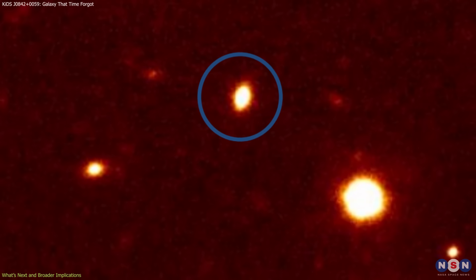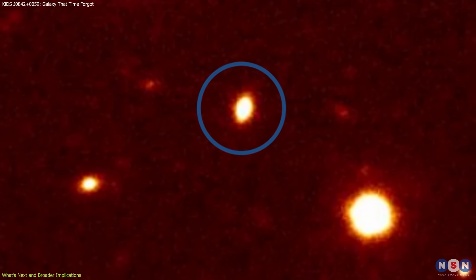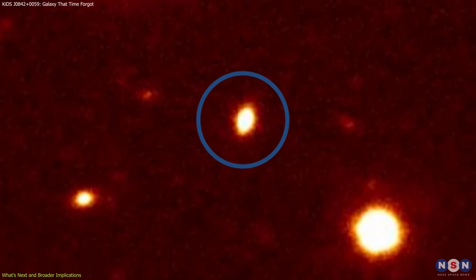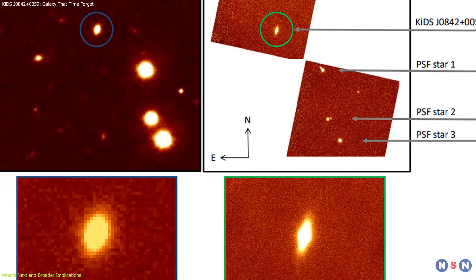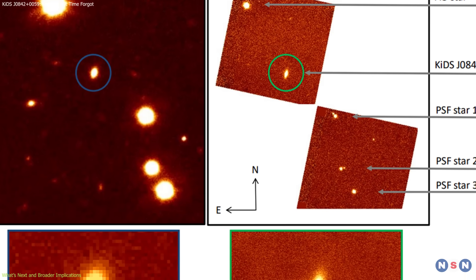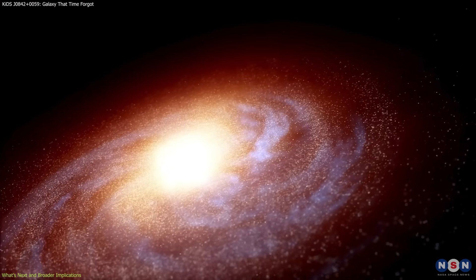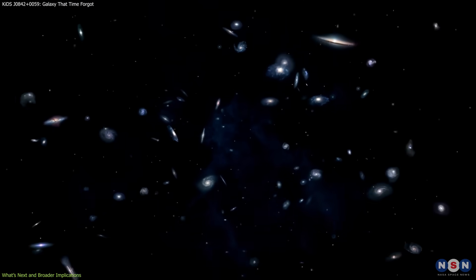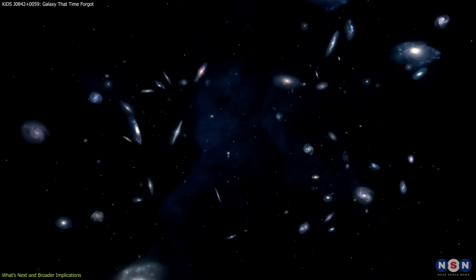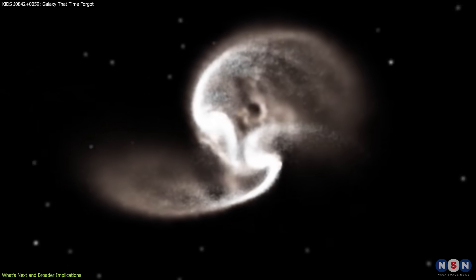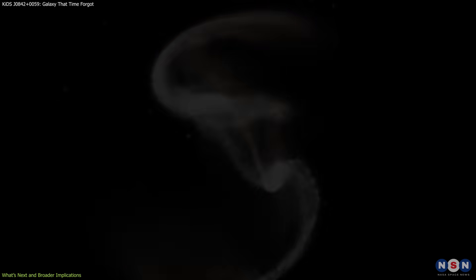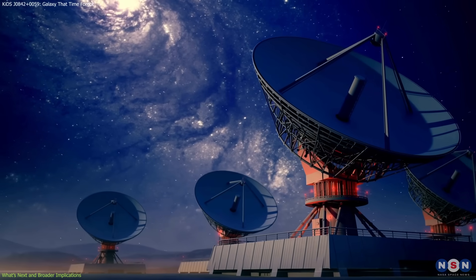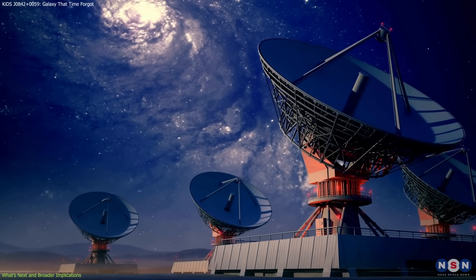The identification of KIDS J0842+0059 adds momentum to a growing area of research: using galactic relics to reconstruct the early universe. The challenge is that these galaxies are extremely rare. Most galaxies have undergone multiple transformations. Finding one that hasn't required both deep surveys and high-resolution imaging.